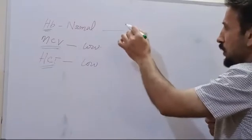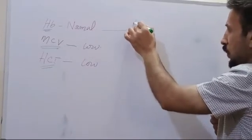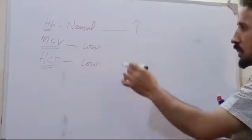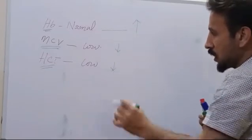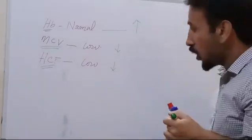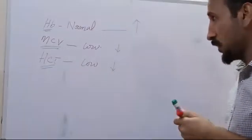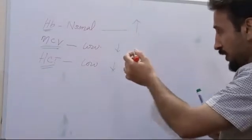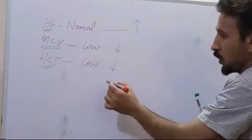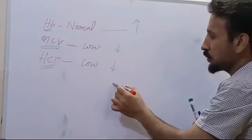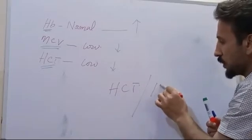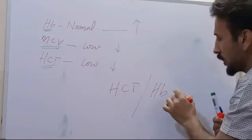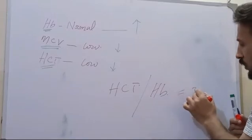Whether this Hb is spuriously elevated or the MCV or the HCT are spuriously low, there is a common formula which must be applied before interpreting them as abnormal, which is the ratio of the HCT, hematocrit, or Hb. Generally, the ratio is 3 to 1.